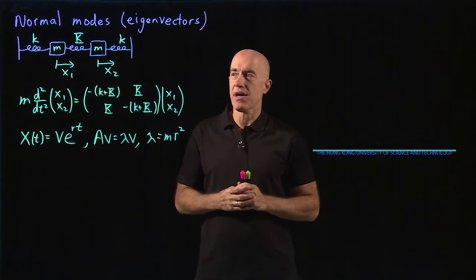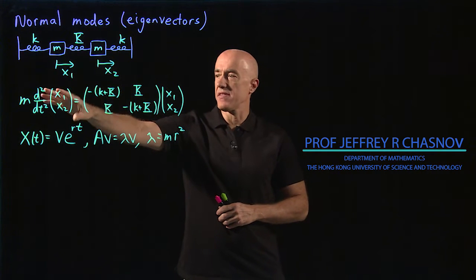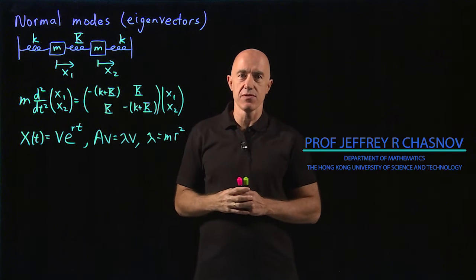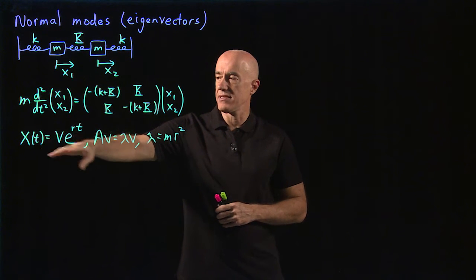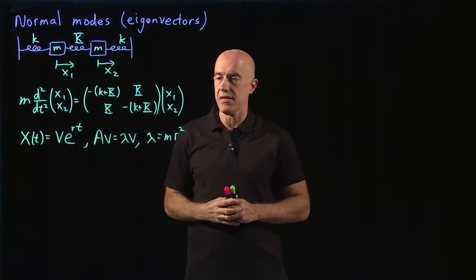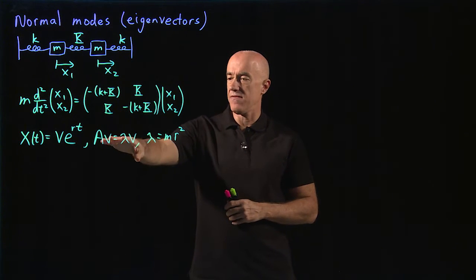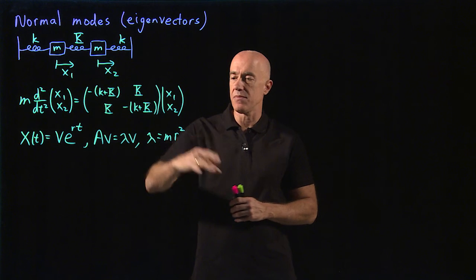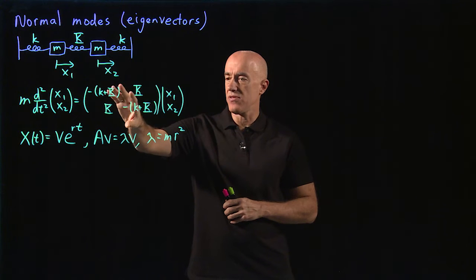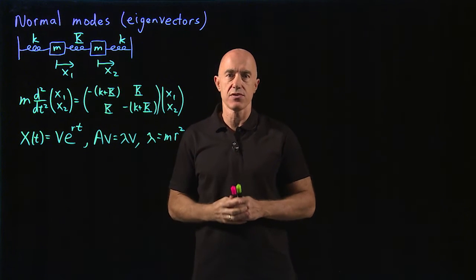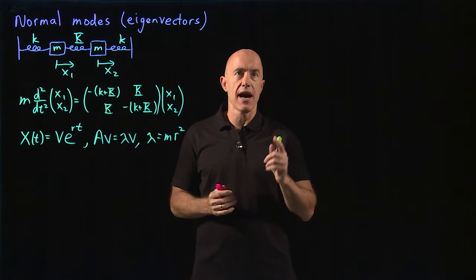We're solving this coupled oscillator problem. We have the governing equations in terms of a matrix equation. We did our usual ansatz of x equals v e to the rt, converted the problem to an eigenvalue problem: Av equals lambda v, where lambda equals mr squared. We've already found the two eigenvalues associated with this matrix, so now we need to find the eigenvectors.